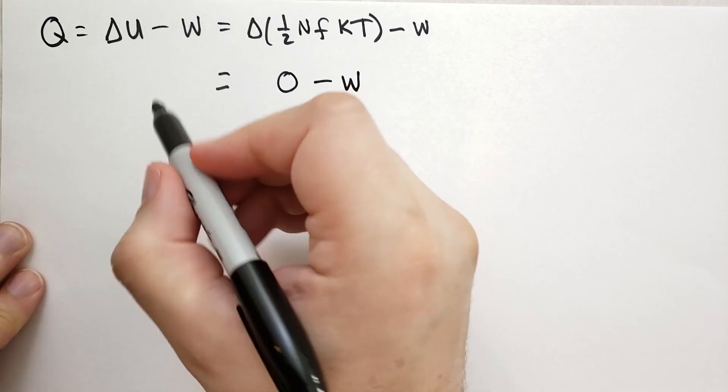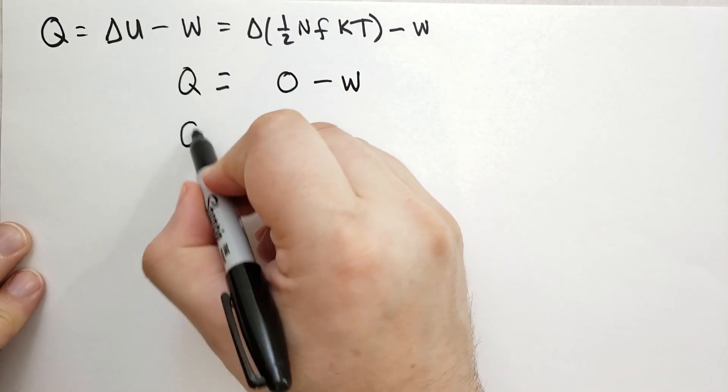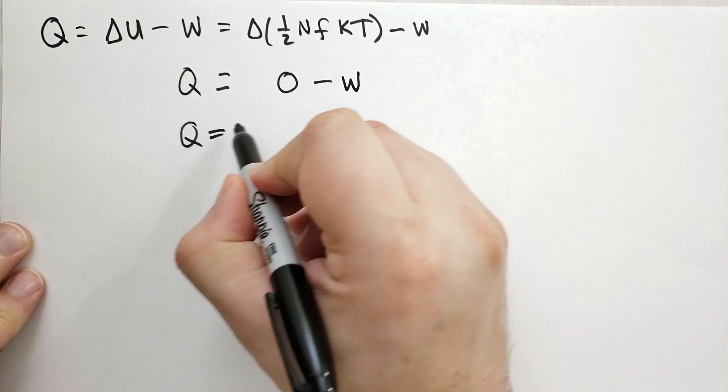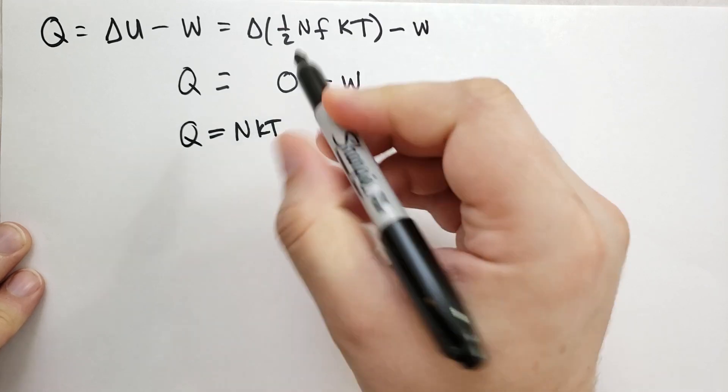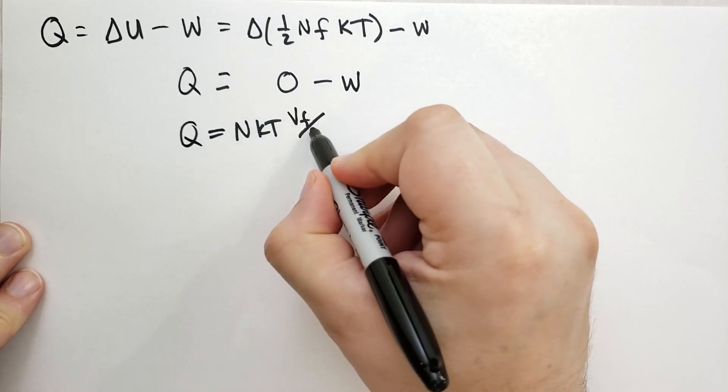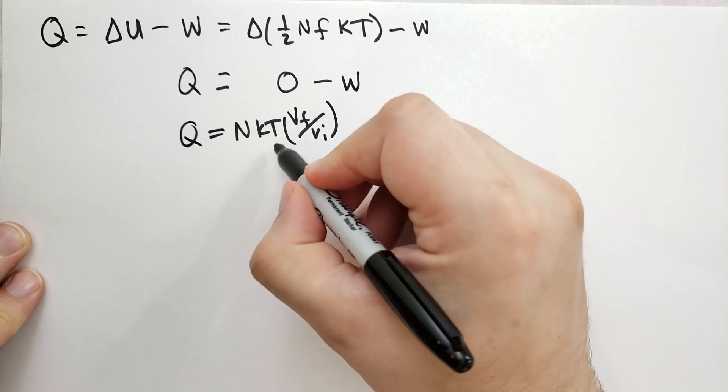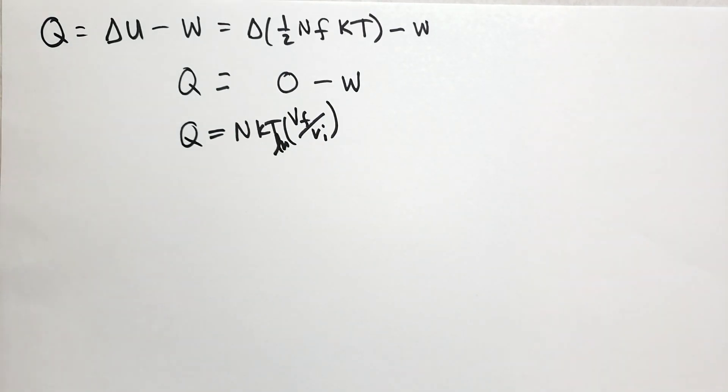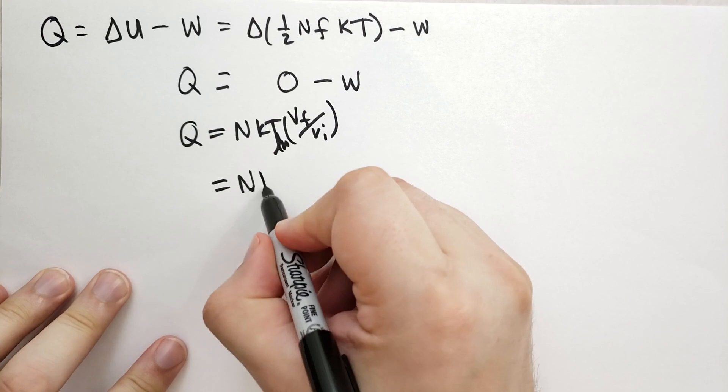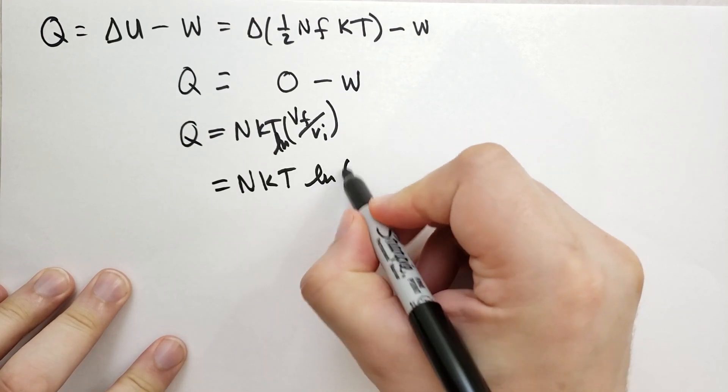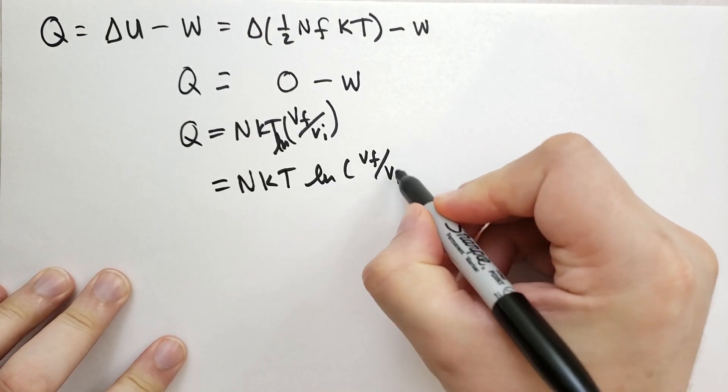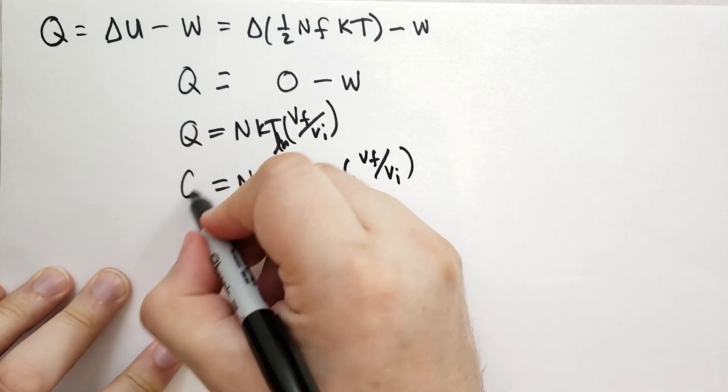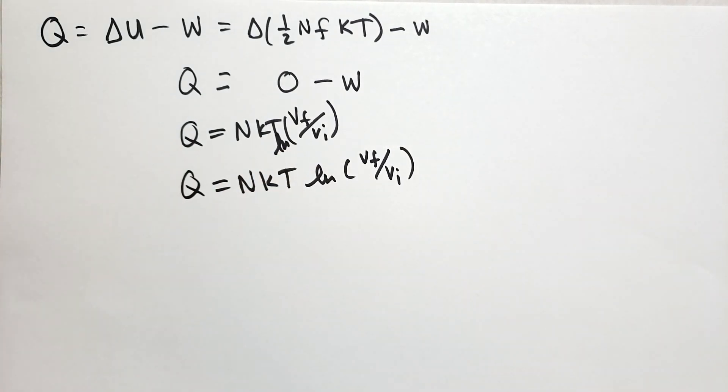So the energy, the heat flowing out of the system is equal to NKT, the final volume divided by the initial volume, log of that. Let me rewrite that again. So NKT log of the final volume divided by the initial volume. That's the heat entering or leaving the system.